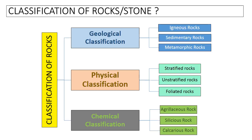In physical classification, rocks are further classified into stratified rocks, unstratified rocks, and foliated rocks. In chemical classification, rocks are further classified into argillaceous rocks, siliceous rocks, and calcareous rocks.